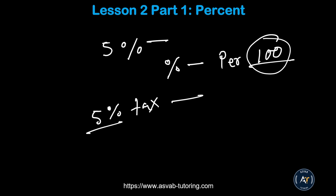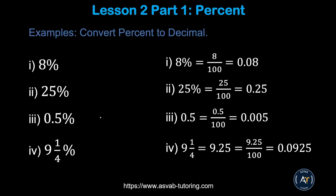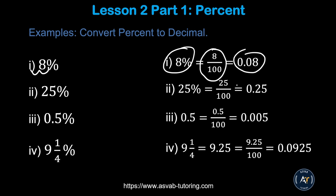Now, how do you convert from percent to decimal? You divide by 100. For example, eight percent equals 8 over 100, which gives you 0.08. Another way is to move the decimal two places to the left: 8% → 0.08, and 25% → move two decimal places → 0.25.